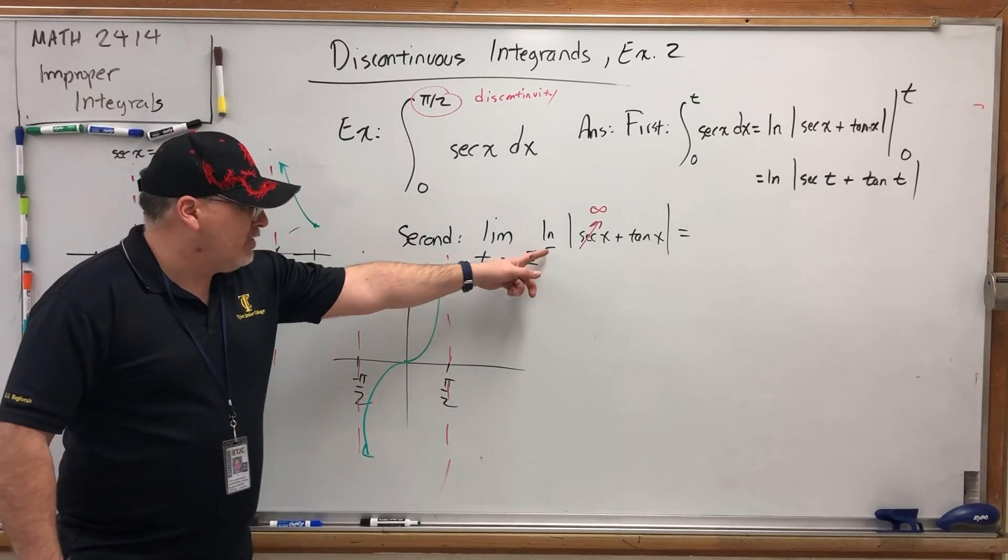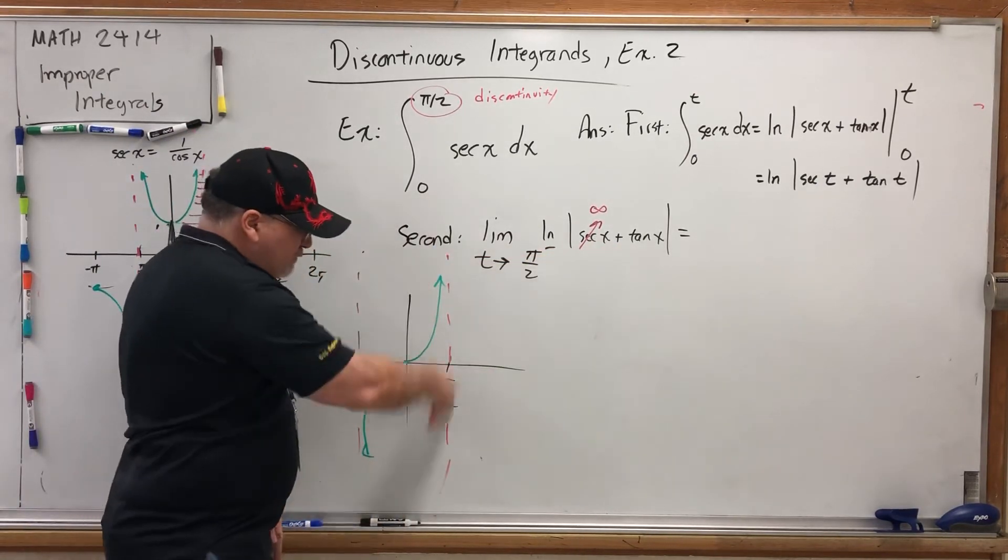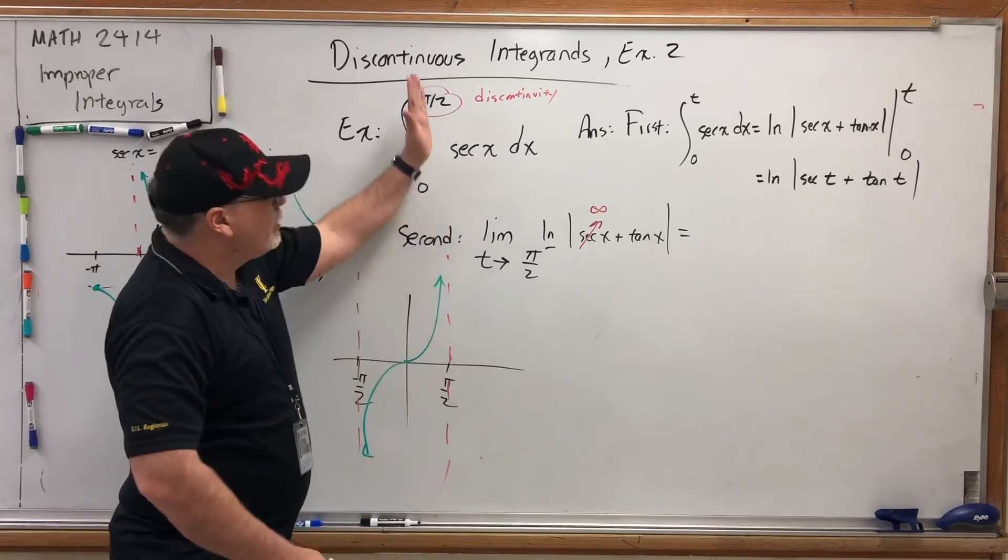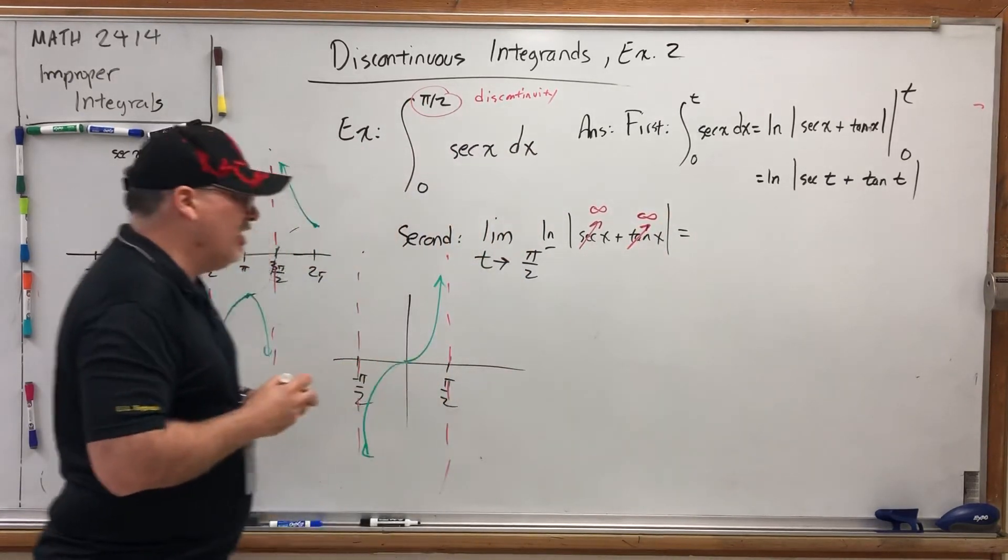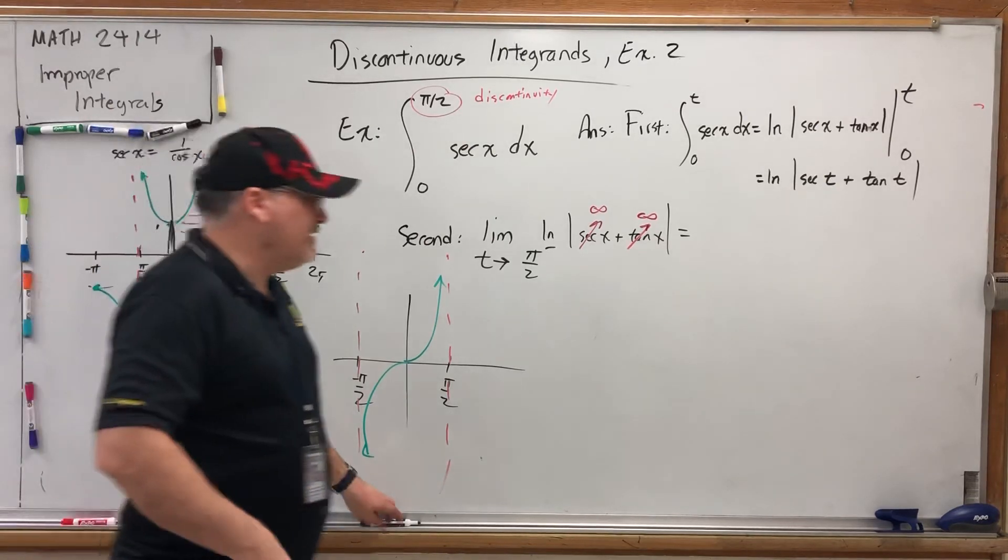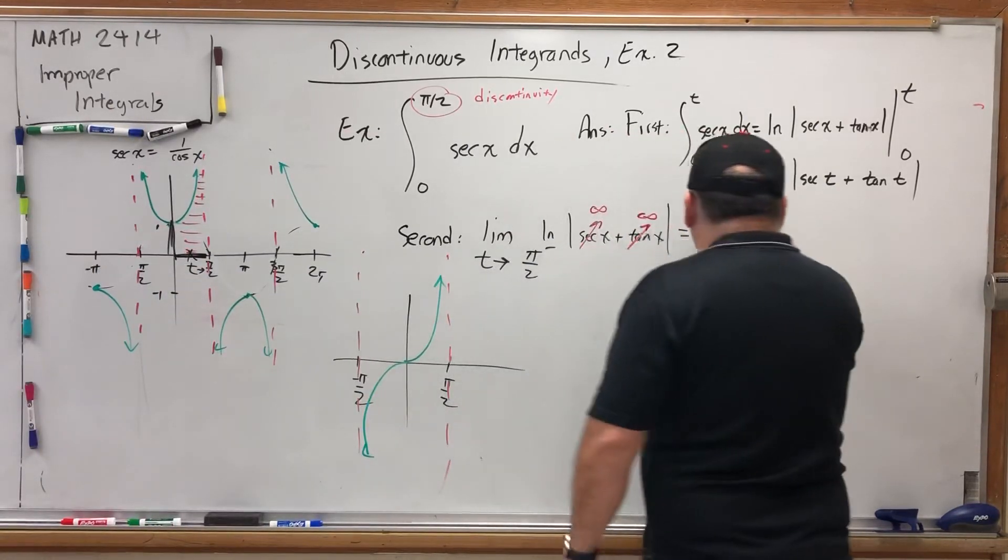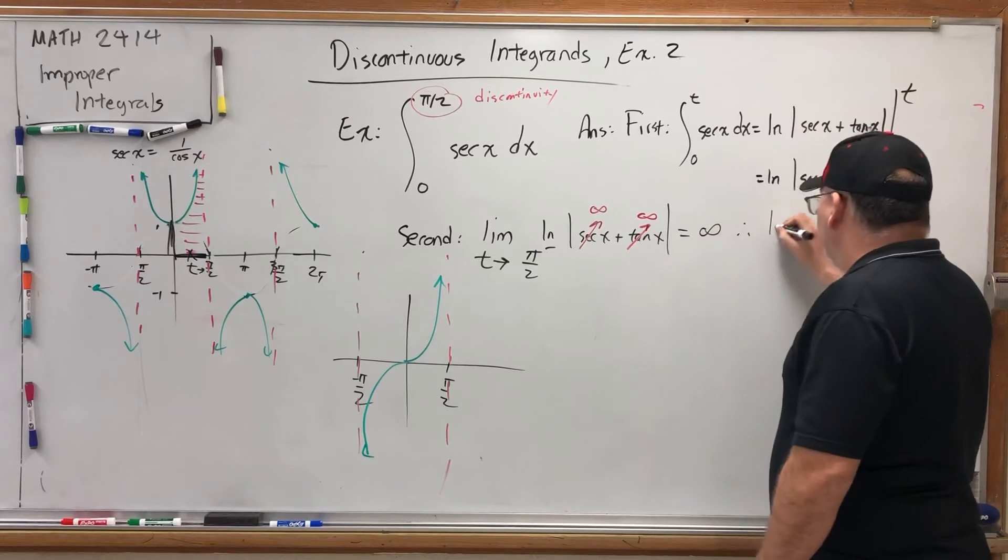But let's check out the tangent. Same thing. As we approach π over 2 from the left on the graph of tangent, here's π over 2 approaching from the left, we're going up to infinity. And we already know that the limit on natural log as you approach infinity is infinity. So this is infinity. Therefore, the integral diverges.